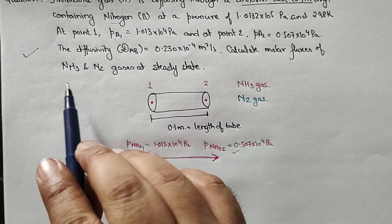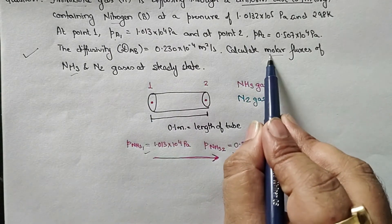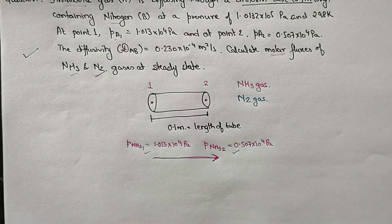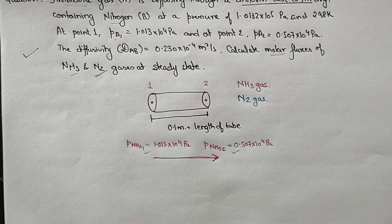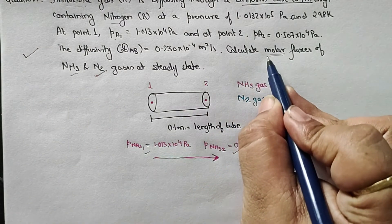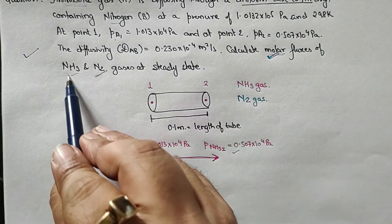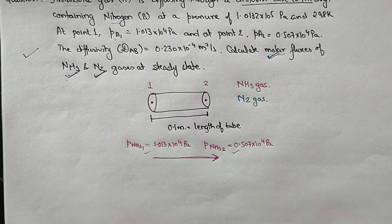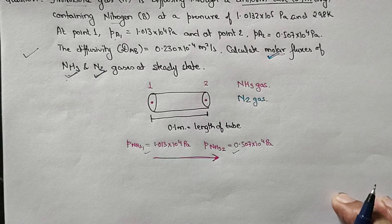We have to find the molar flux of ammonia as well as of nitrogen. In the previous numerical we solved, we only focused on finding the diffusion of helium into nitrogen, where nitrogen was considered stationary. But in this case, the problem is asking us to find the molar flux of both ammonia and nitrogen — meaning both gases are moving.